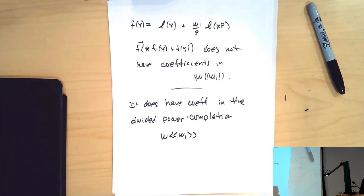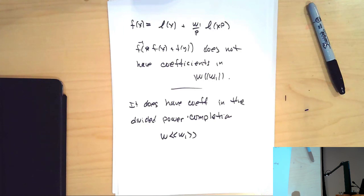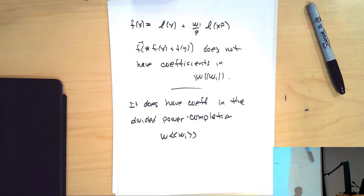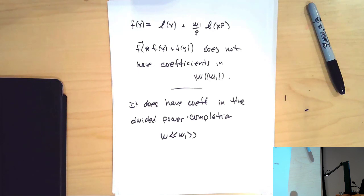For the more general setup of modeling the action via Dieudonné modules, is there any reason you chose the covariant story with the Verschiebung instead of the Frobenius? In the next lecture the contravariant version is going to come, but it's the covariant version that most directly maps into the Lubin-Tate ring — the contravariant version winds up receiving a map. It has the most direct connection to the Lubin-Tate ring itself. Let's thank Mike again and adjourn for lunch.